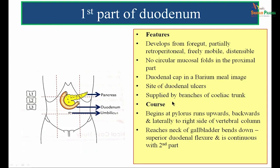The first part of the duodenum is supplied by branches of the celiac trunk, which is the artery of the foregut, since the first part develops from the foregut. In its course, it begins at the pylorus, runs upwards, backwards, and laterally to the right side of the vertebral column, reaches the neck of the gallbladder, then bends down at the superior duodenal flexure, after which it continues with the second part.